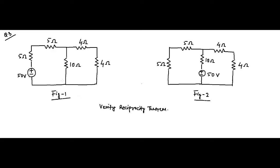As usual, we have divided the circuit into two parts depending on the location of the voltage source. The 50 volt voltage source is in the first branch, and in the second figure the only difference is that it is shifted to the second branch. We have to find out the currents in the respective branches, and if these two current values are the same then the reciprocity theorem is verified.